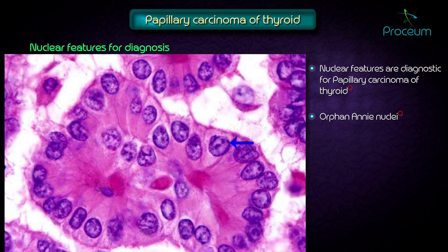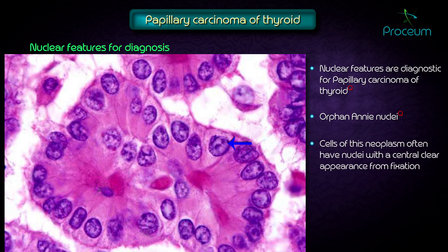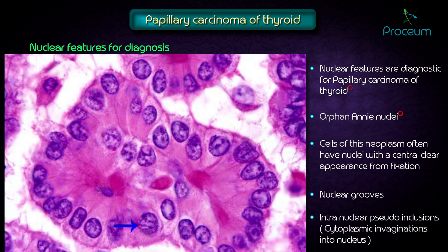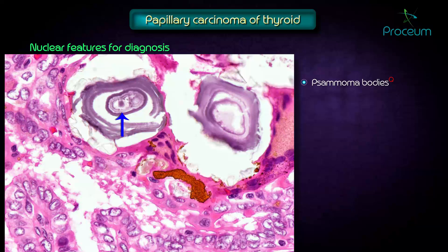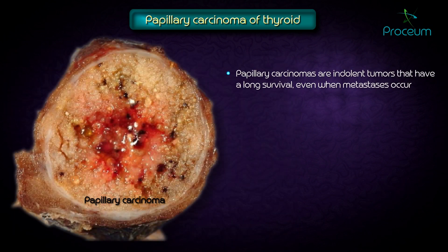The orphan Annie nuclei are optically clear nuclei where the cells of this neoplasm have a nucleus with a central clear appearance from fixation. The next important diagnostic feature is nuclear grooves. Intranuclear pseudoinclusions, which are cytoplasmic invaginations into the nucleus, can be seen as nuclear grooves. Other important diagnostic features include psammoma bodies. All these are important diagnostic features of papillary carcinoma of the thyroid.